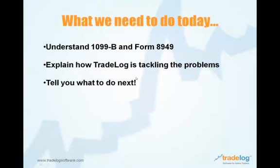Here's what we're going to talk about today: I'm going to explain the new 1099-B so you understand what this form looks like and what's being reported. We'll also cover Form 8949, which most of you have to file unless you're marked-to-market or filing 1065. Then we'll talk about how TradeLog is tackling the problems with these forms and what you need to do next.